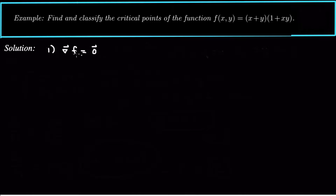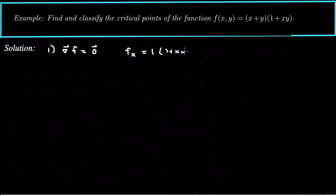So f sub x is going to equal, by the product rule, the derivative of the first is just one times the second which is one plus xy, plus the first x plus y times the derivative of the second with respect to x which is y, and set that equal to zero.